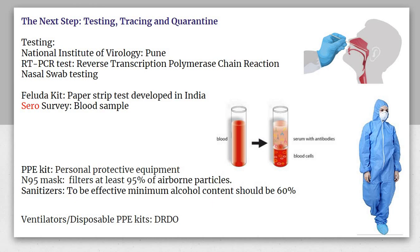For testing, the first tests were conducted at the National Institute of Virology, whose headquarters is in Pune. A direct question can be asked about this. The test used is the Real-Time Reverse Transcription Polymerase Chain Reaction, or RT-PCR. There is also nasal swab testing — a nasal swab sample is collected and then tested. This is relatively rapid but not as effective as RT-PCR.